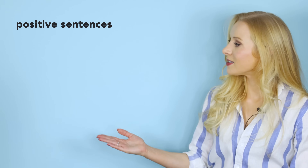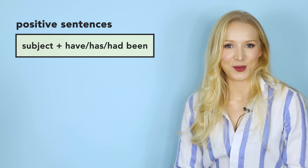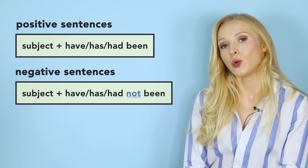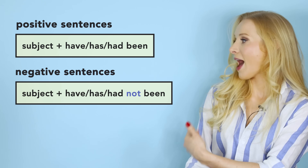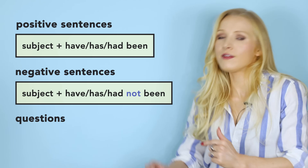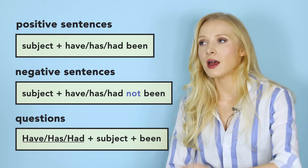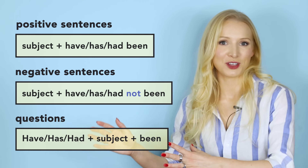Now let's move on to positive and negative sentences and questions. In positive sentences, the structure is subject plus have, has or had been. In negative sentences, we put 'not' between have, has or had and been: subject, have/has/had, not, been. In questions, we invert the subject word order and put have, has or had before the subject: have/has/had plus subject plus been.